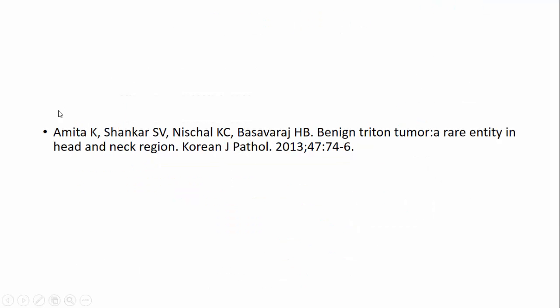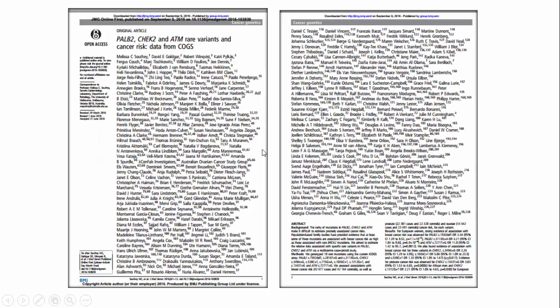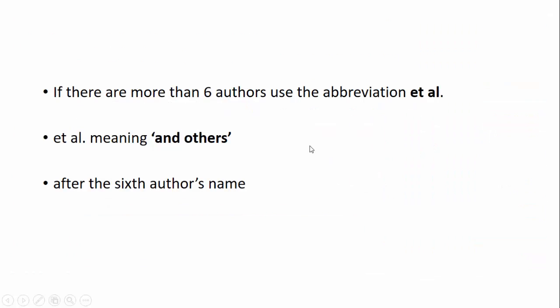So this is how the Vancouver style of referencing of a journal article is done. Now, if you find an article where you have more than a single author — in this case there are more than a hundred authors — obviously you cannot write all hundred authors' names. So what do you do? If there are more than six authors, use the abbreviation 'et al.' Et al. means 'and others,' and it has to be used after the sixth author's name.